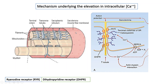The sarcolemma invaginates into the cell, forming tubular structures called transverse tubules — T-tubules for short. These T-tubules surround the myofibrils at least at two places in each sarcomere, so almost every myofibril present inside the cell has T-tubules surrounding it.